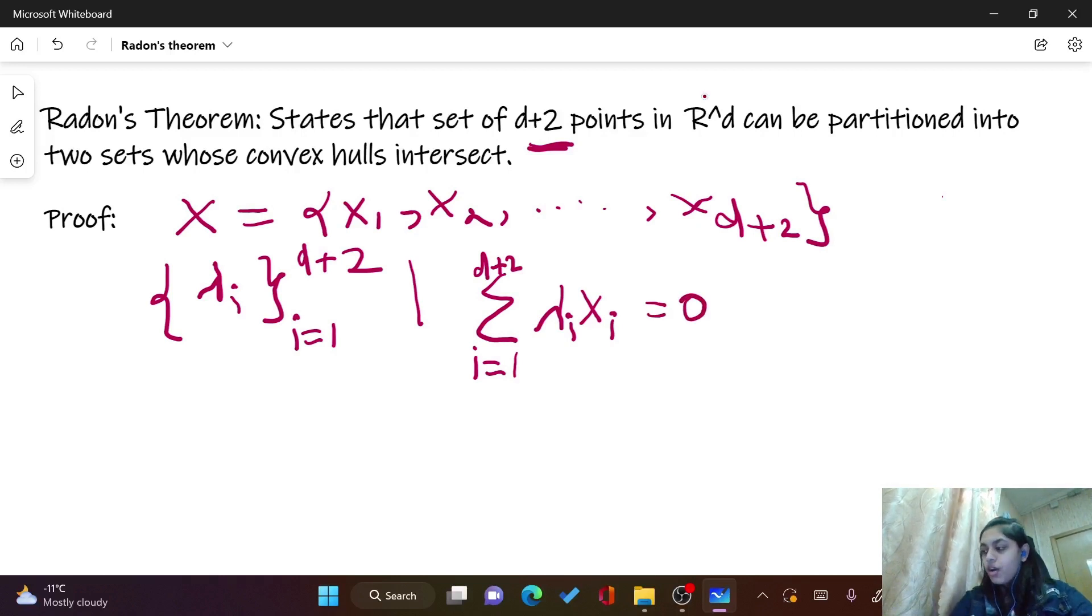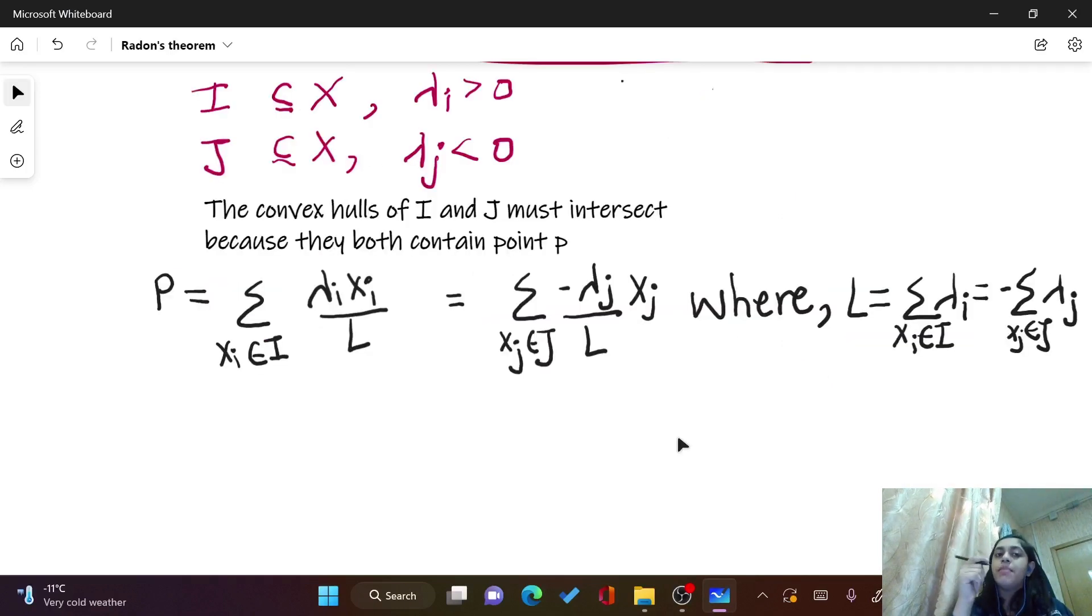Also, the summation of all these scalar multipliers is equal to zero. To summarize: I is a subset of x such that all the values of lambda_i which are positive are included in that subset. Similarly, J is the subset of x such that all values of the scalar multipliers which are negative are included in this subset.